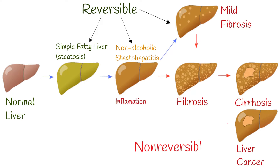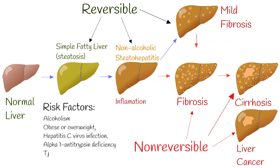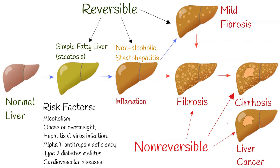Risk factors for fatty liver: alcoholism is the most important risk factor for alcoholic fatty liver. For non-alcoholic fatty liver, risk factors include being obese or overweight — particularly with an apple-like body shape, meaning a lot of fat around the waist — as well as hepatitis C virus infection, alpha-1 antitrypsin deficiency, type 2 diabetes mellitus, cardiovascular diseases, hypothyroidism, polycystic ovary syndrome, metabolic syndrome, high cholesterol, age over 50, and smoking.